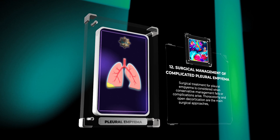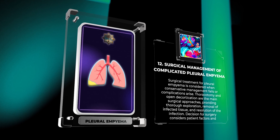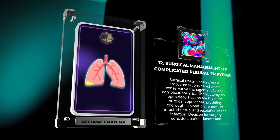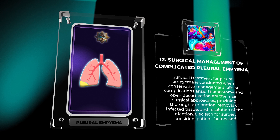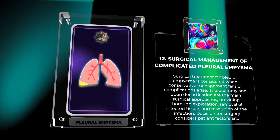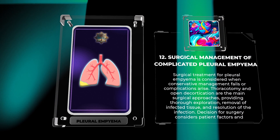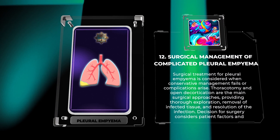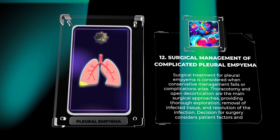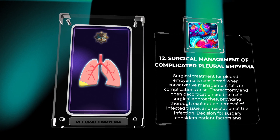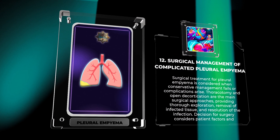Surgical treatment for pleural empyema is considered when conservative management fails or complications arise. Thoracotomy and open decortication are the main surgical approaches, providing thorough exploration, removal of infected tissue, and resolution of the infection. The decision for surgery considers patient factors and availability of expertise.